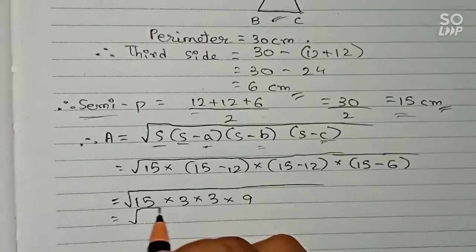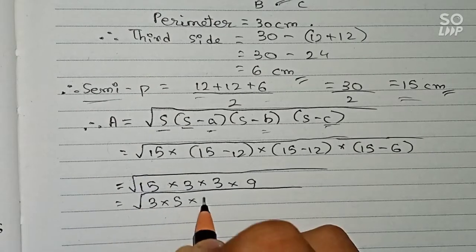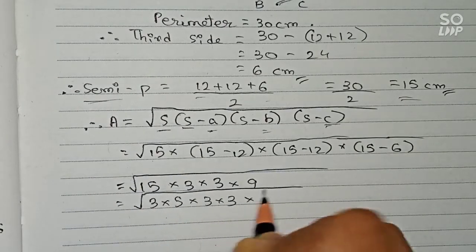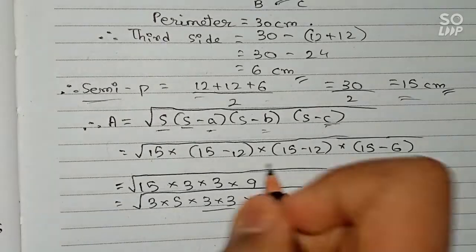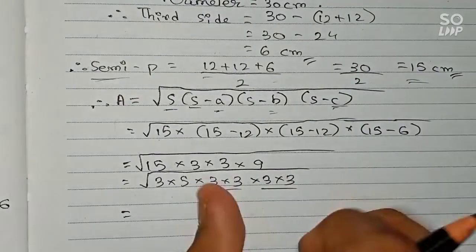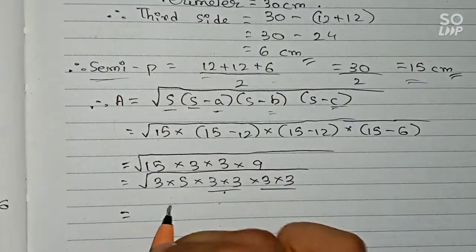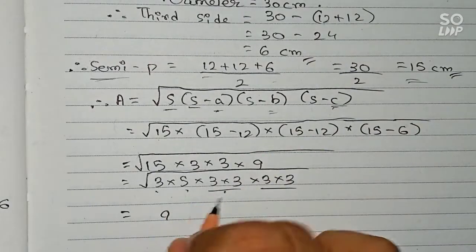So break up these numbers. So 15 means 3 times 5, multiply by 3 times 3, multiply by 9 which means 3 times 3. So here one pair, here one pair, here one pair. So therefore two threes will remain. So 3 times 3 is 9, and this is the pair which you cannot pair up.